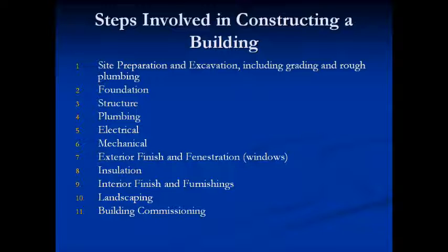After these things are done, you'd have the interior finishing — like what are the walls going to be on the inside, what do they have in them and on them, and what type of furnishings will be in the building. After these things are going, you can include the landscaping, meaning what trees and plants, what foliage will be in the area, and finally your building being commissioned — or basically it's starting up. The whole process of using the building has begun. So those are the steps that are involved.